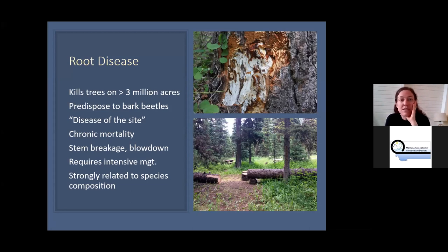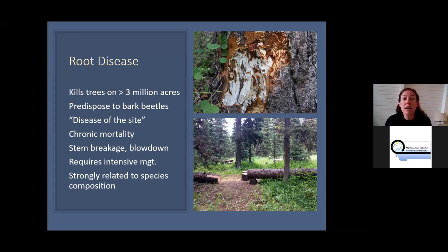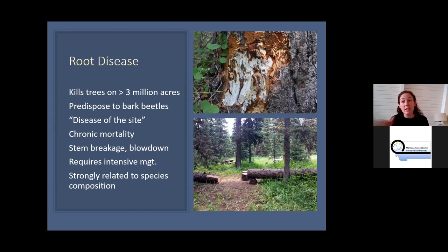Now I'll talk about root disease. Root disease doesn't get many newspaper articles, but it's a huge impact on Montana forests — approximately 3 million acres a year have trees dying from root disease. It truly shapes forests. It's really a disease of the site: once it's there, you can't eliminate it. Fire doesn't get deep enough to kill it. You'll have chronic mortality, falling stems, and trees blowing down, requiring pretty intensive management.